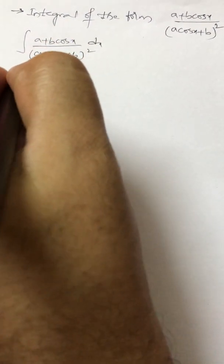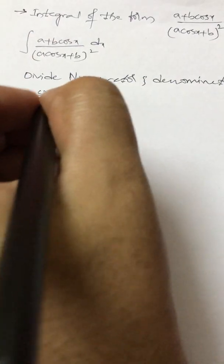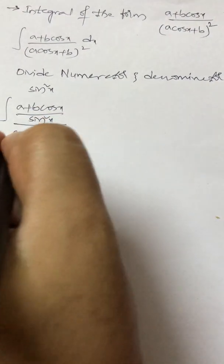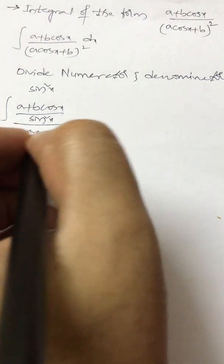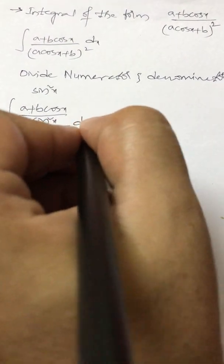What we do here is divide the numerator and denominator by sin²x. So dividing (a + b cos x) / sin²x by (a cos x + b) / sin x, the whole square, dx.